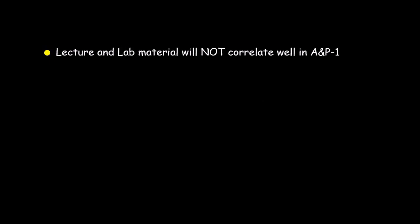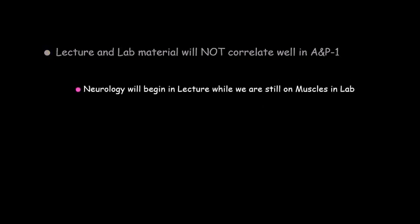The lecture and lab material for A&P1 is not going to correlate very well — and that's not just me, it's across the whole nation. For instance, neurology has about five chapters in lecture and we'll spend two to three weeks on just the nervous system, whereas the muscle lab is only one week. So you may still be doing muscles in lab while we're covering the nervous system in lecture. A&P2, however, does correlate a little bit better — for example, if we're doing the digestive system in lecture, we're most likely doing it in lab also.